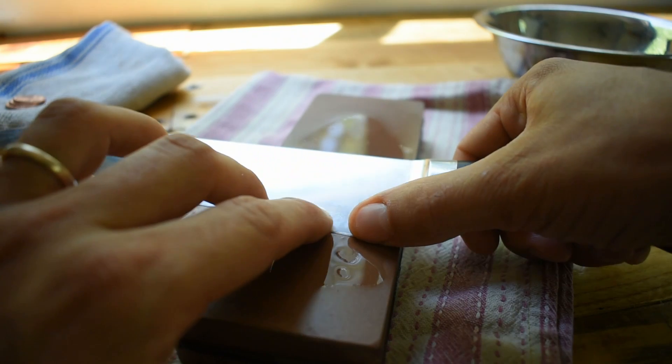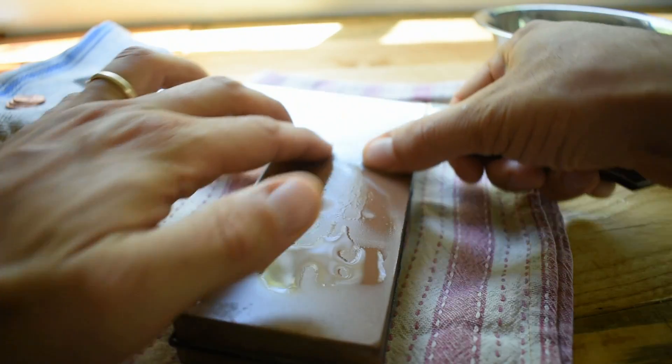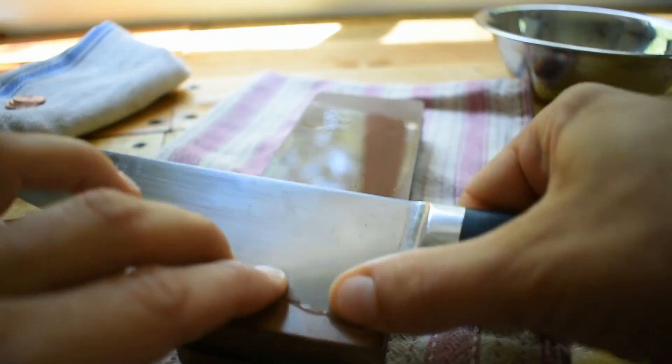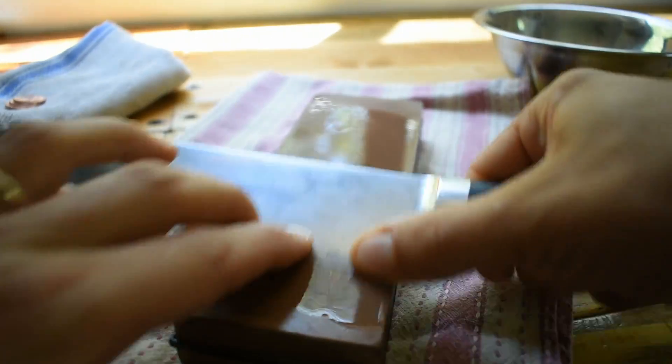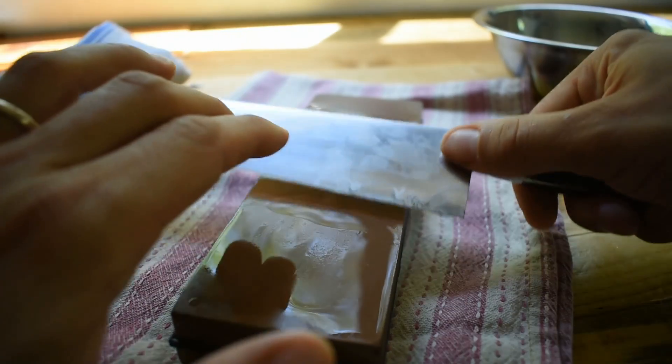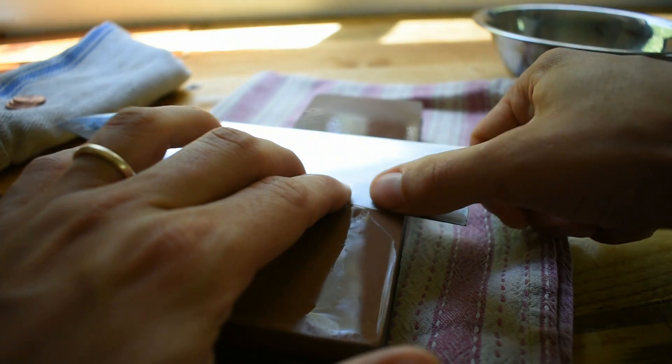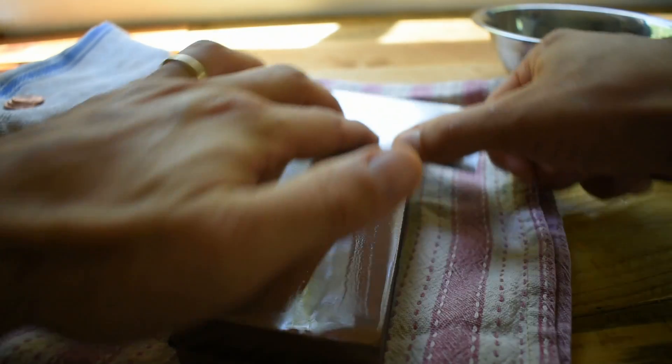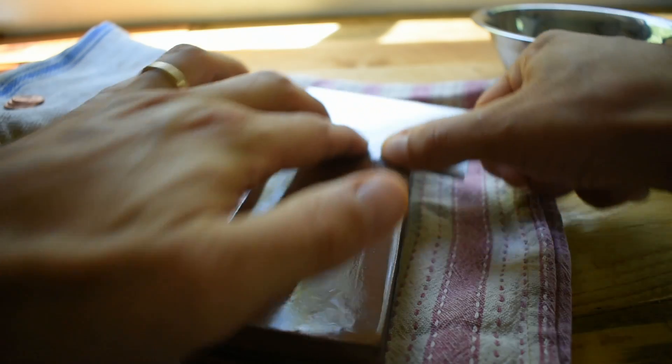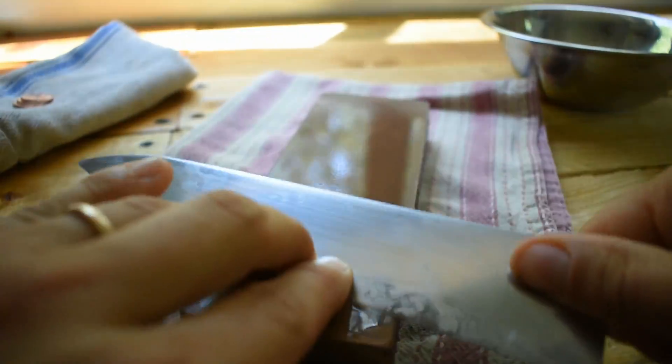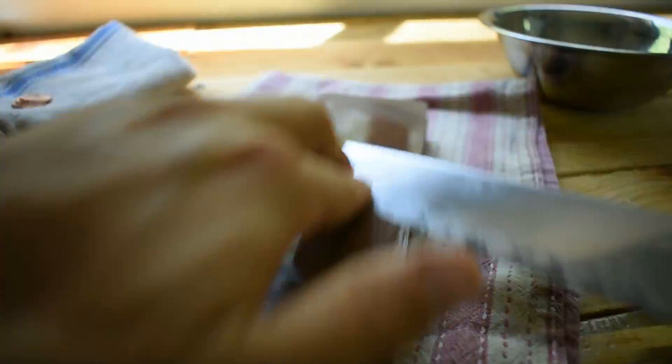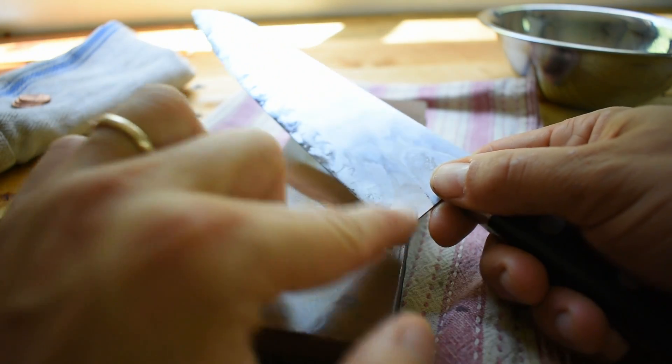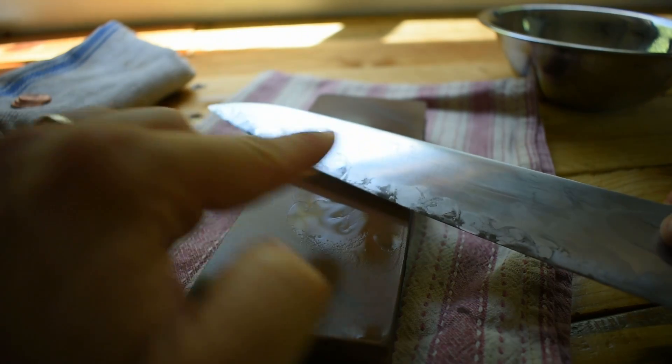And then I like to press and make sure that I get contact the whole time. So when you're starting, you can count. Go up and down 10 times and then move. New section. Put your two fingers down and keep on going. Work your way all the way on the knife. Work your way up. Keep on going.